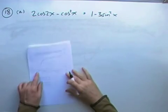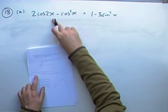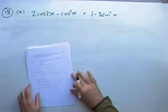So number 18, part A, show that this expression, 2cos2x minus cos squared x, equals this, 1 minus 3 sine squared x.